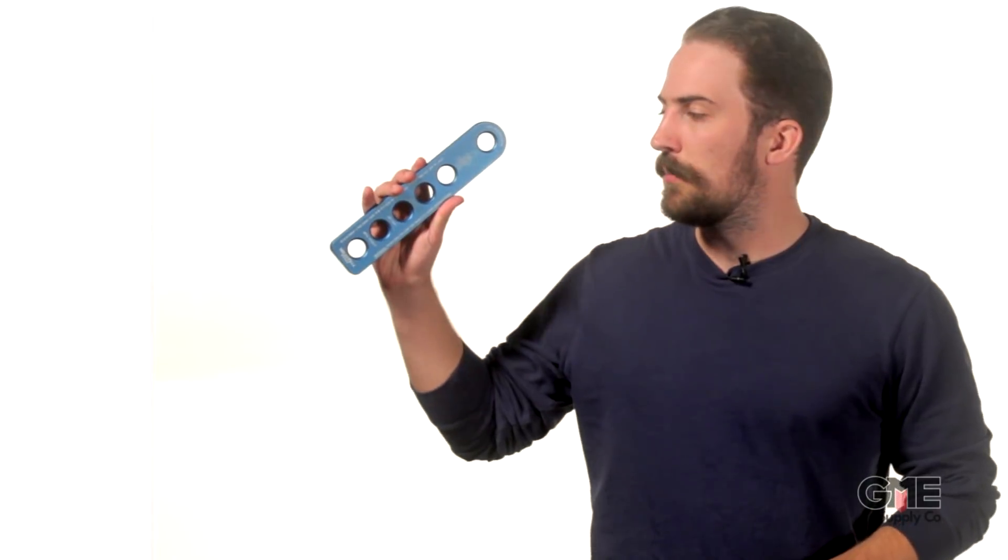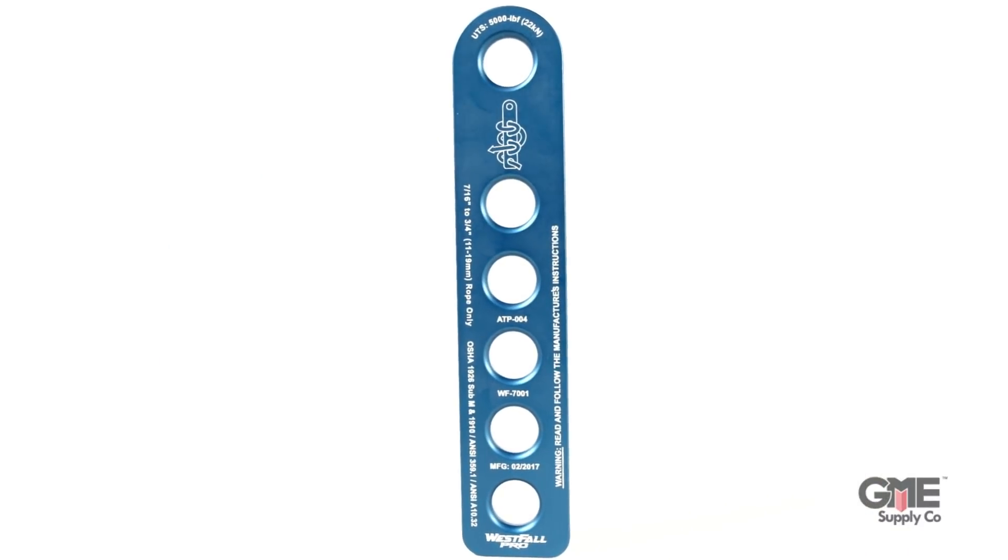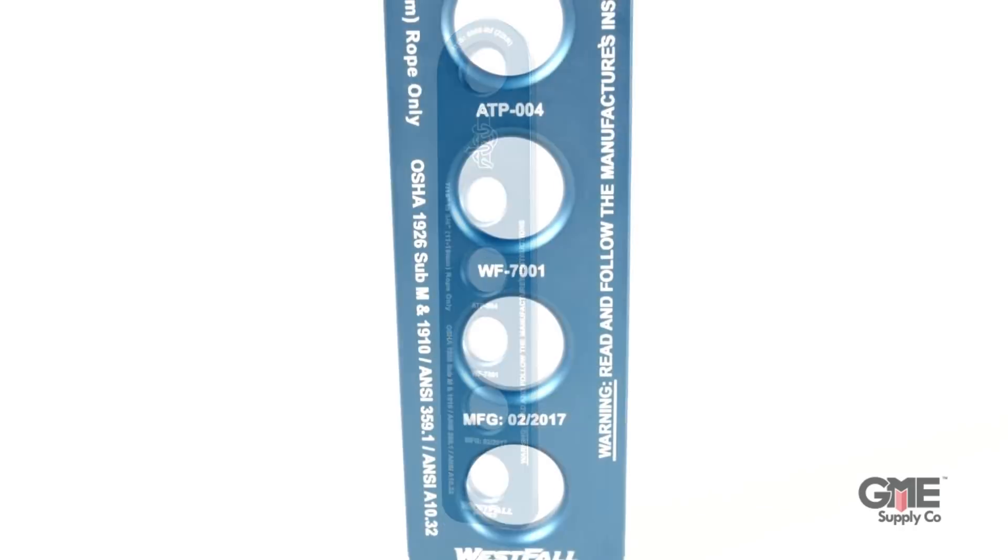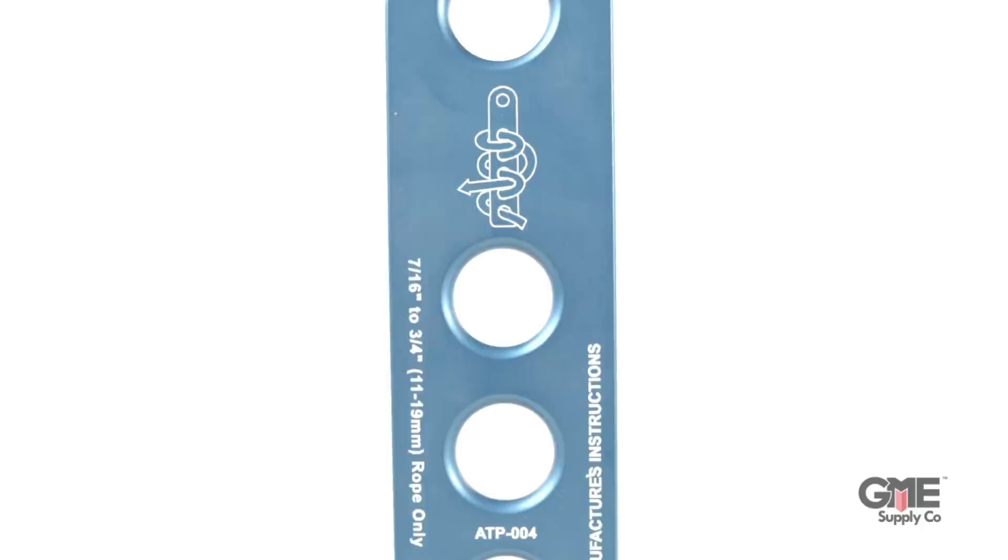For this explanation we'll be using the Westfall Pro rope termination plate. This anodized aluminum termination plate is made for use with 7/16 inch to 3/4 inch kern mantle rope and 5/8 inch to 3/4 inch three strand rope.